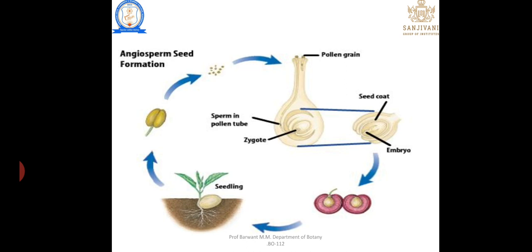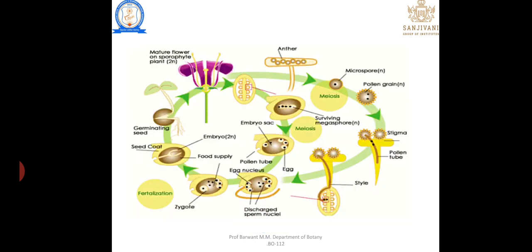Here we see the anther. From the anther, pollen grains are produced. These undergo pollination, then pollen tube development, followed by fusion of male and female gametes, zygote development, embryo development, and finally fruit, seed, and new plant.